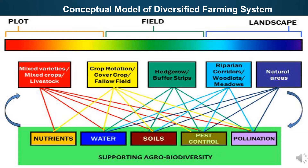Here we will go through the conceptual model of diversified farming system. Across ecological scales, diversified farming system practices include the use of multiple genetic varieties within a single crop or livestock species, or multiple species intercropped including agroforestry or integration of livestock, which has been shown here in the red box.